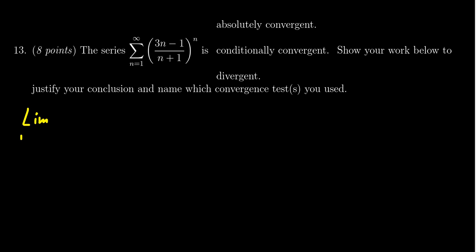For the root test, we need to consider the limit as n goes to infinity of the nth root of the absolute value of our sequence, 3n minus 1 over n plus 1 raised to the nth power right there. And so because of the nth root, when you combine it with the nth power, they cancel out very nicely. So we have to take the limit as n goes to infinity of just the absolute value of 3n minus 1 over n plus 1.